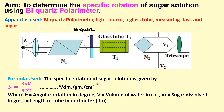The formula used for calculation of specific rotation S is: S = (θ × V) / (m × l), with units of degrees per decimeter per gram per cubic centimeter. Here θ is the angular rotation in degrees, V is the volume of water in cc, m is the amount of sugar in grams, and l is the length of the tube in decimeters. We repeat the experiment for two or three concentrations, take the average of S1, S2, and S3, and compare it with the standard value of S for the specific rotation of sugar solution.